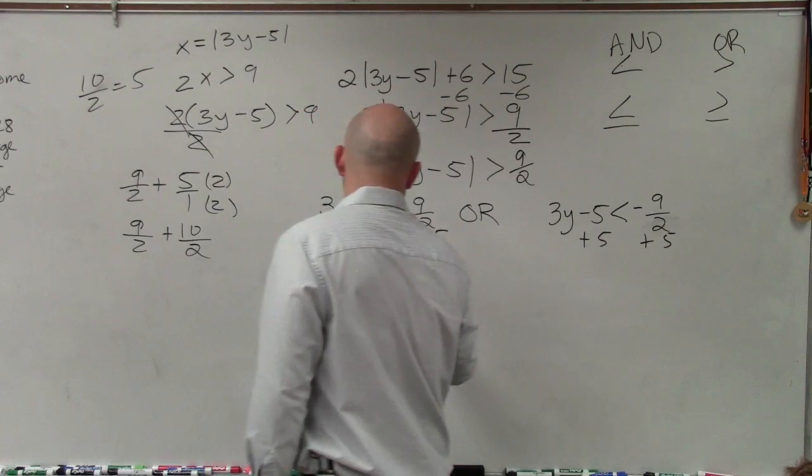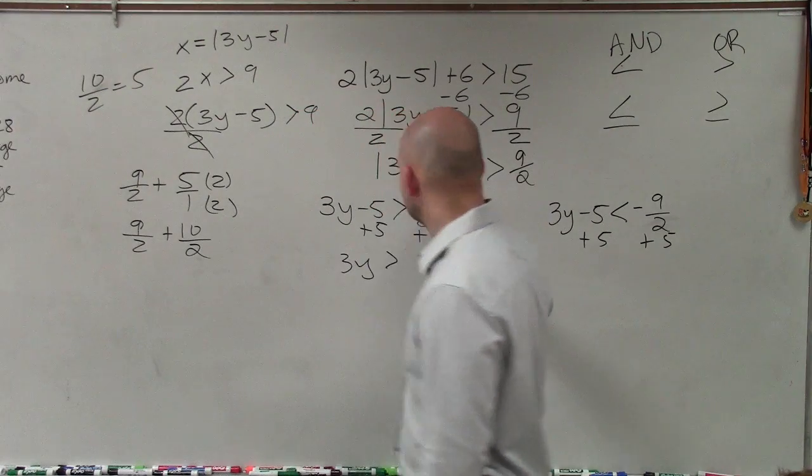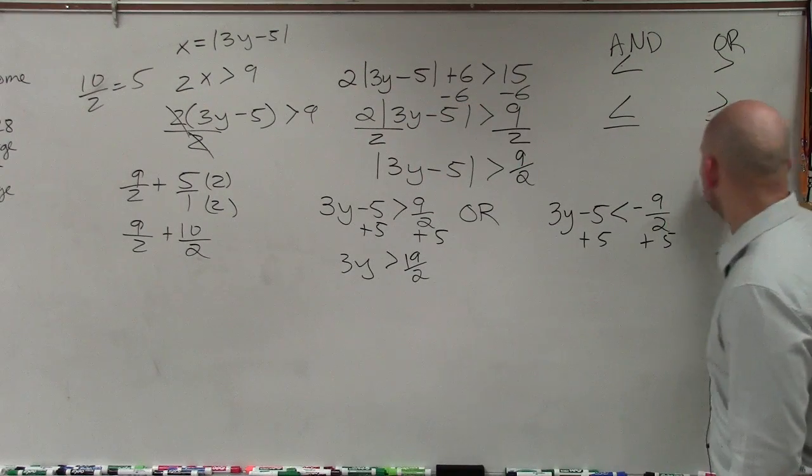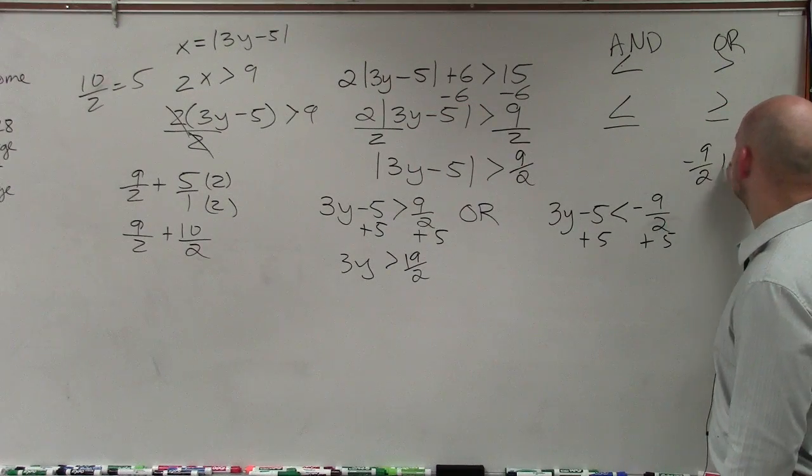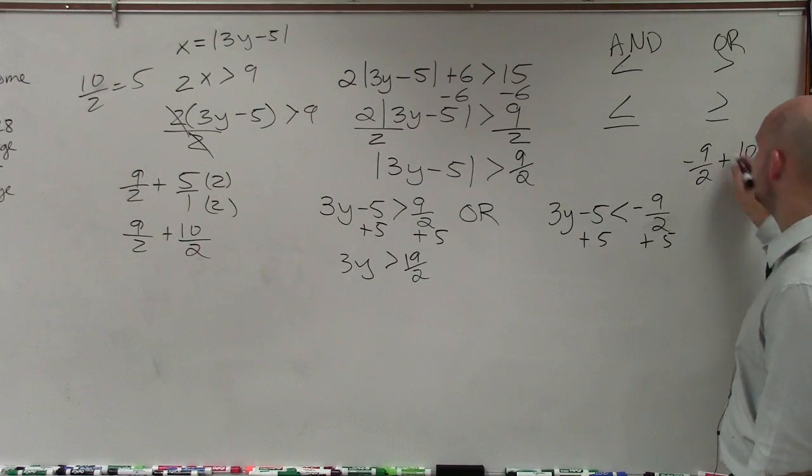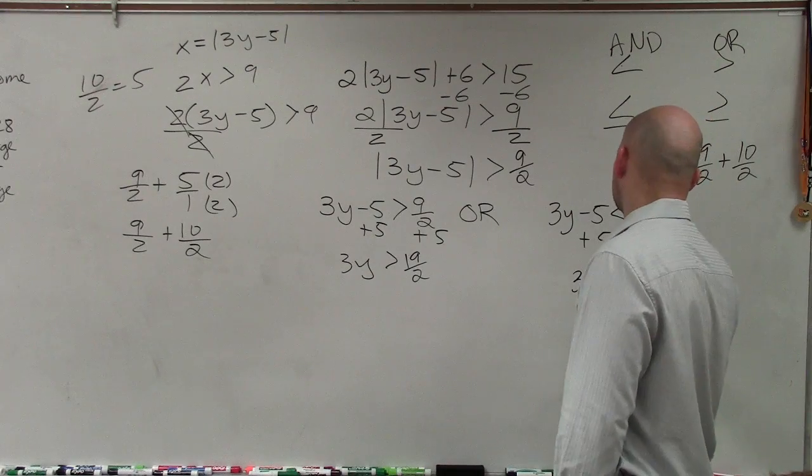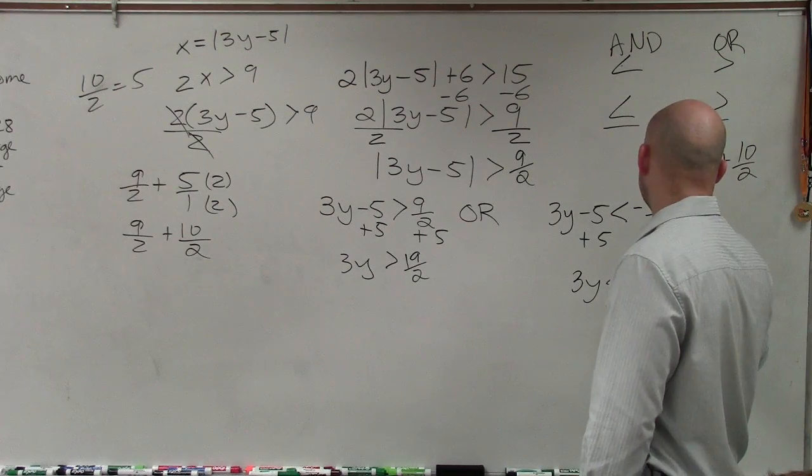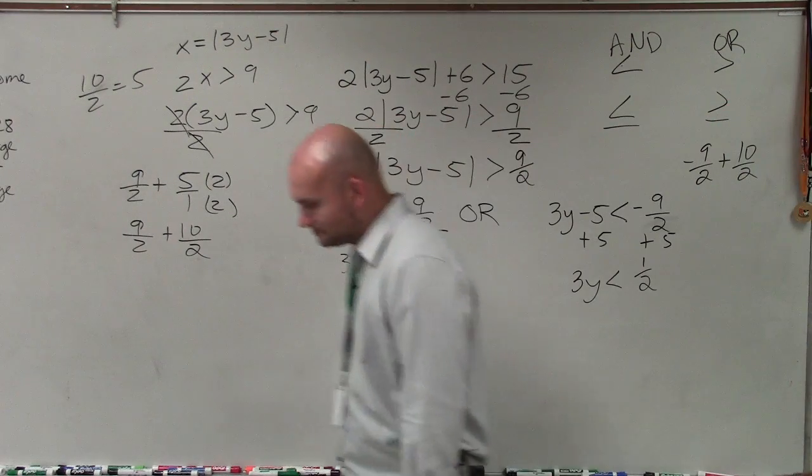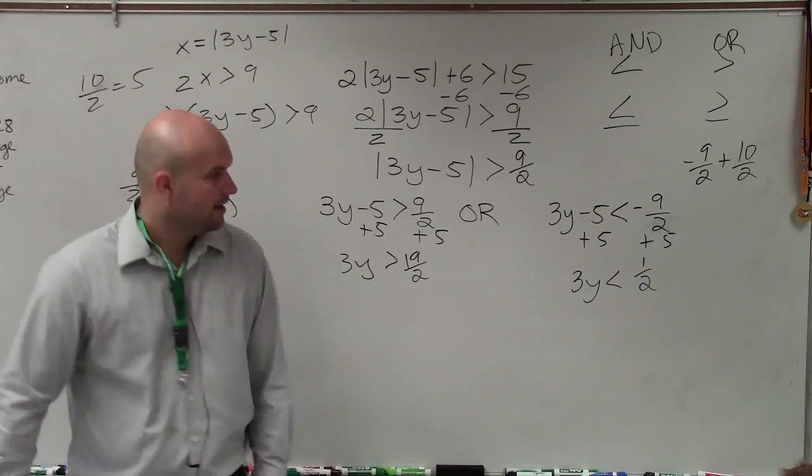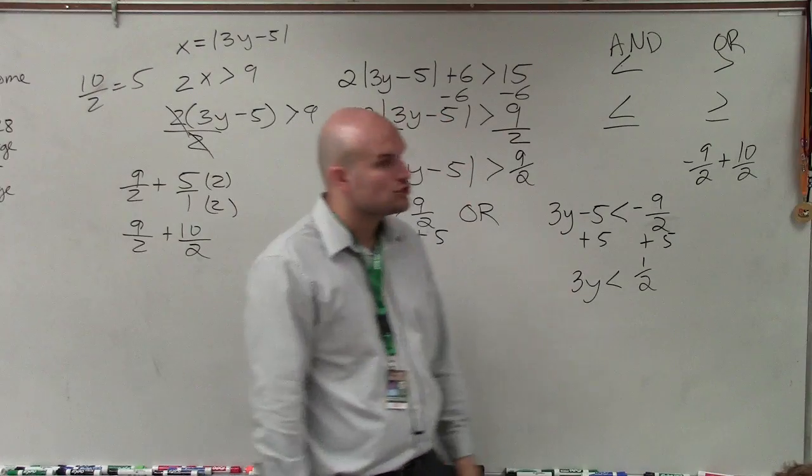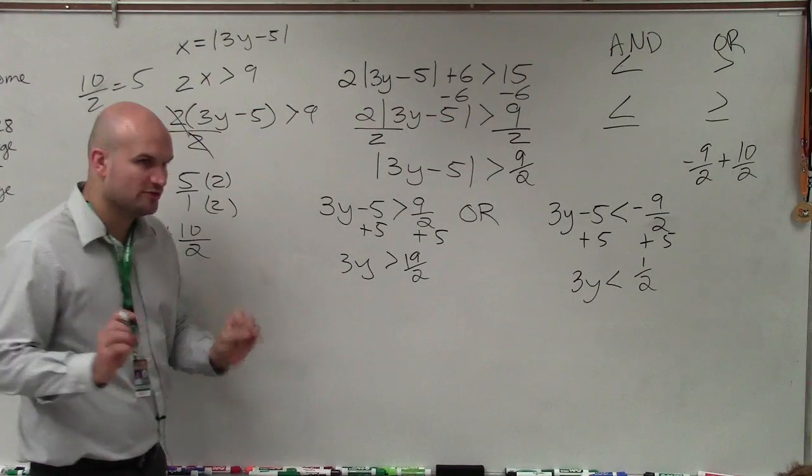Yes. But 10 halves has a denominator of 2. Right? So it's much easier to add these. Since they have the same denominator, you can add them. So therefore, I'd have 3y is greater than, really, 10 halves plus 9 halves is 19 halves. And then over here, I have negative 9 halves plus 10 halves. Adding 5 is the same thing as adding 10 halves. So that's going to be 3y is less than 1 half. Don't really get so confused, guys, with the fractions.